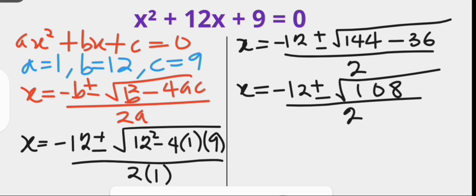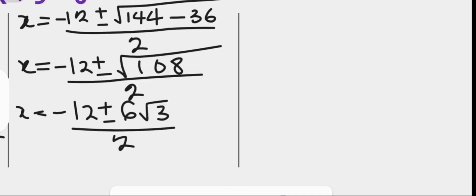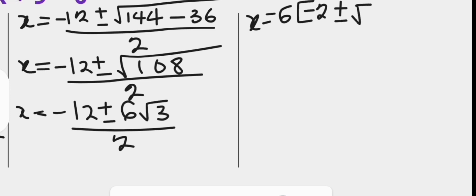Now 108 is not a perfect square, so we can express it in radical form. x will then be minus 12 plus or minus — since 108 is 36 times 3 and the square root of 36 is 6, we can write that as 6 root 3 — over 2. Then from the numerator we can factor 6, giving x equals to 6 into bracket, minus 2 plus or minus root 3, over 2.